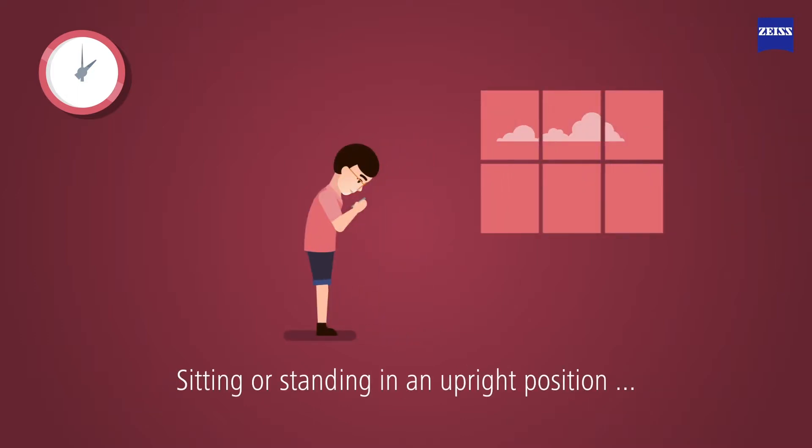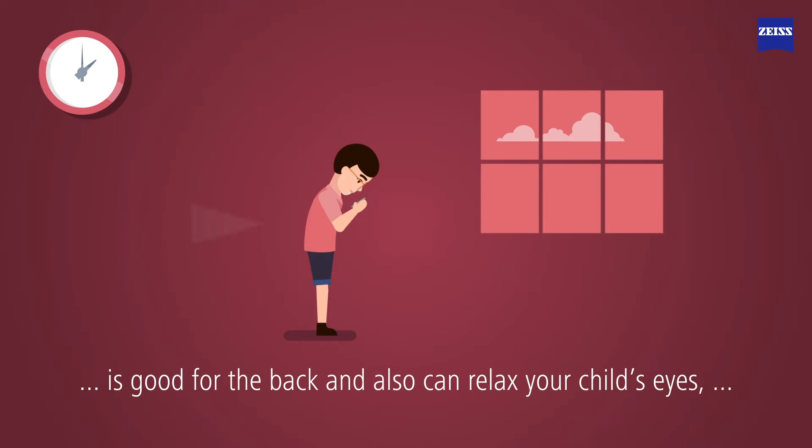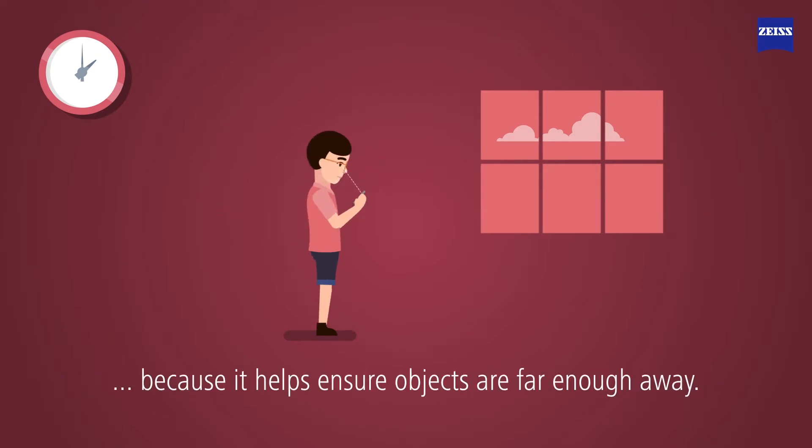Sitting or standing in an upright position is good for the back and also can relax your child's eyes because it helps ensure objects are far enough away.